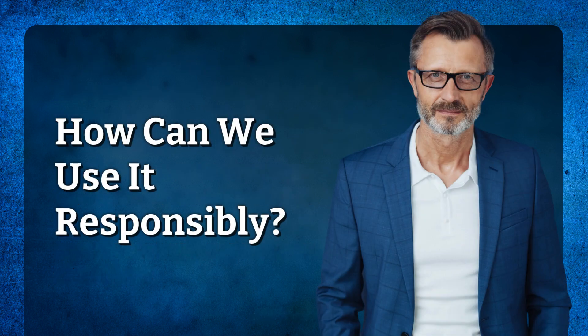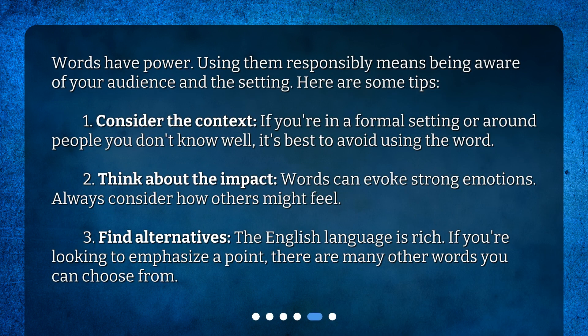How can we use it responsibly? Words have power. Using them responsibly means being aware of your audience and the setting. Here are some tips: 1. Consider the context — if you're in a formal setting or around people you don't know well, it's best to avoid using the word. 2. Think about the impact — words can evoke strong emotions, so always consider how others might feel. 3. Find alternatives — the English language is rich, and if you're looking to emphasize a point, there are many other words you can choose from.